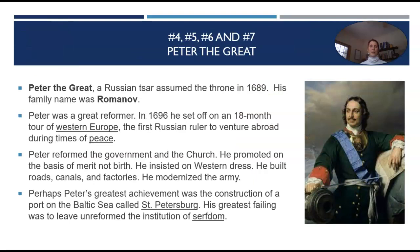Peter the Great, a Russian czar, assumed the throne in 1689. His family name was Romanov. Peter was a great reformer. In 1696, he set off on an 18-month tour of Western Europe — the first Russian ruler to venture abroad during times of peace, meaning not during wartime. Peter reformed the government and the church, promoted on the basis of merit not birth, insisted on Western dress, built roads, canals, and factories, and modernized the army. Perhaps Peter's greatest achievement was the construction of the port on the Baltic Sea called St. Petersburg. His greatest failing was to leave unreformed the institution of serfdom — meaning he was not able to abolish or get rid of serfdom.